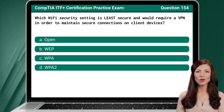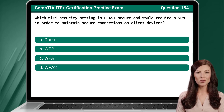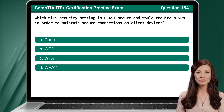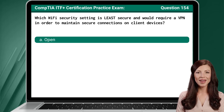Question 154. Which Wi-Fi security setting is least secure and would require a VPN in order to maintain secure connections on client devices? The answer is A — open.